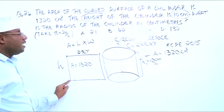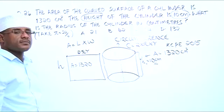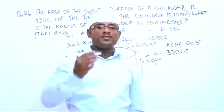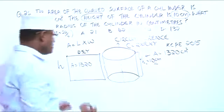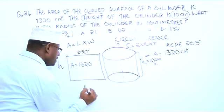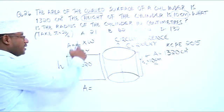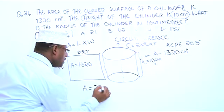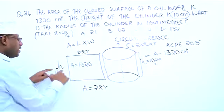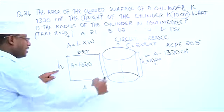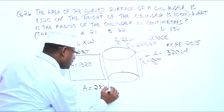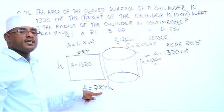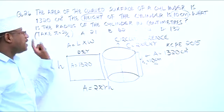Our width is the height of the cylinder. That is why when we want to get the area of the curved surface of a cylinder, we say: Area is equal to the length — which is 2 times pi times radius — multiplied by the width, which is the height H. This gives us the curved surface area of a cylinder.